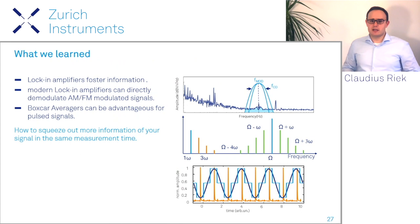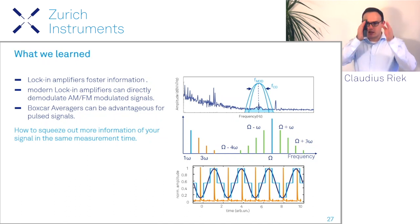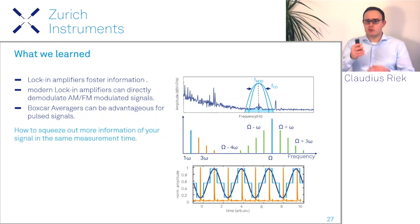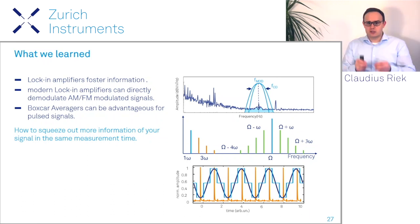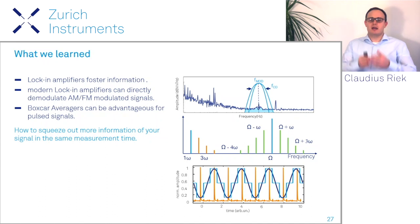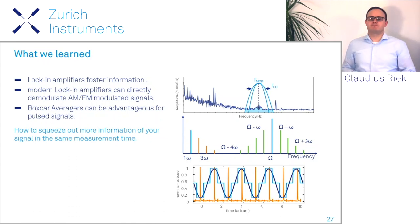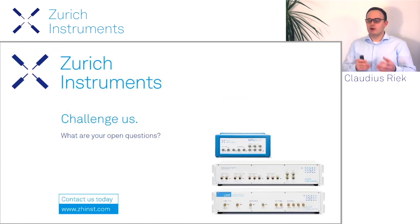To summarize: lock-in amplifiers extract information by acting as a bandpass filter, suppressing unwanted noise. Modern lock-in amplifiers can directly demodulate AM-FM modulated signals and recover side band signals without the need for tandem demodulation. Boxcar averagers are advantageous for pulsed signals, capturing more signal at higher harmonics of the fundamental modulation frequency. I hope I have shown you how to squeeze more information out of your signal in the same measurement time. Thanks for joining — if you have more questions, get in touch and let's discuss.